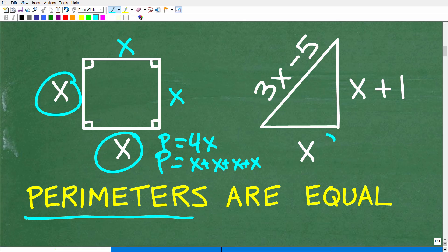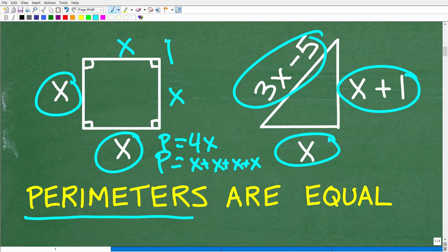The triangle, the perimeter of the triangle is going to be x plus x plus 1 plus 3x minus 5. So if the perimeter of the square is equal to the perimeter of the triangle, we can build ourselves a lovely equation. Because when you have a variable, you can't solve for that variable unless you have an equation. We have all the information we need to build out a lovely algebraic equation. So let's go ahead and do that right now.